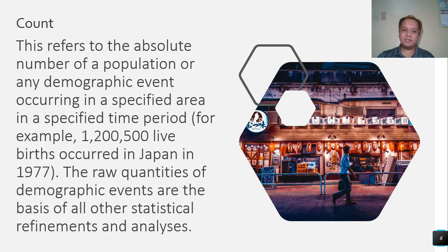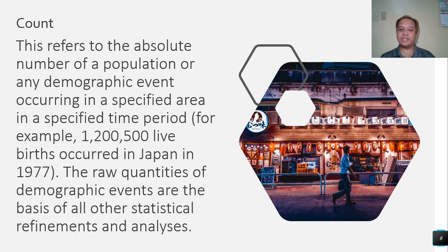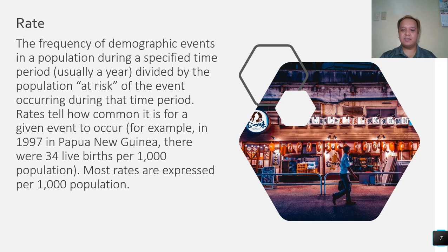The tools of demography include: Count — this refers to the absolute number of a population or any demographic event occurring in a specified area during a specified time period. For example, 1,201,500 live births occurred in Japan during 1977. The raw quantities of demographic events are the basis of all other statistical refinement and analysis.